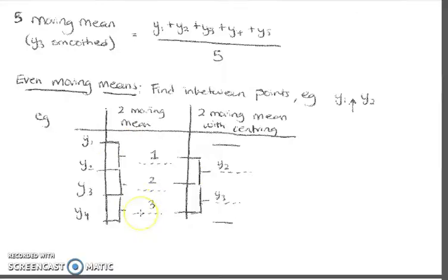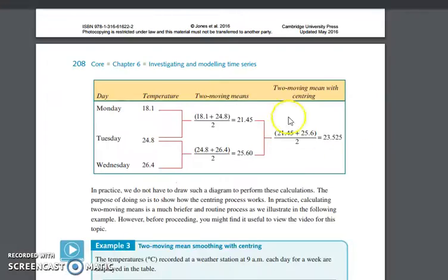I'm going to go through more examples in the revision weeks back at school. But to recap, if we've got a two moving mean, it falls in between the two. When we center it, we take the two values and it falls back in line. In the textbook on page 208, here's an example of how it falls in between. Then if we take the centering, it falls back in line with one of the points on your x-axis, say Tuesday. That data point has to be in line with your x-axis.